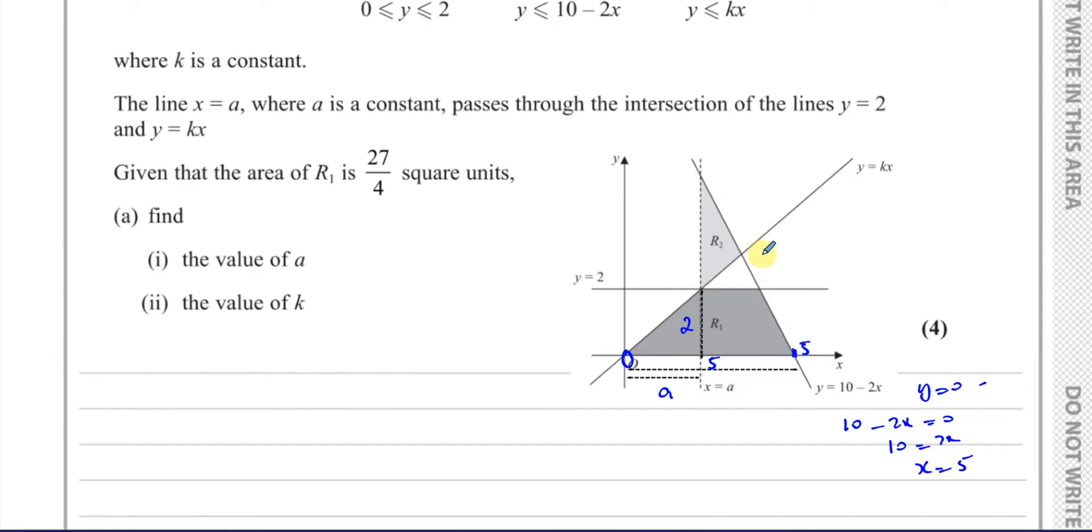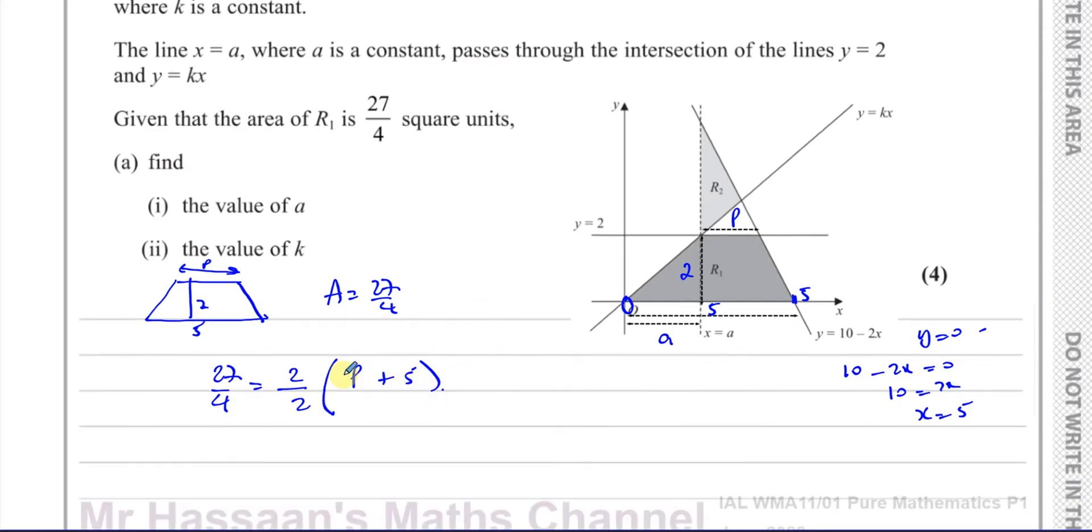And now what we need to find is this length here that will help us find the area of the trapezium. So I don't know what this length here is, but I can find that length. So let's find what that length is there. We've got that this is 5, and this is 2, and this I've called it P. But I know the area of the trapezium is 27 over 4, so I can say that 27 over 4 square units is equal to the distance between the parallel sides divided by 2 times the sum of the parallel sides. So these twos will cancel out. So I'm left with 27 over 4 minus 5 equals P. So P is equal to 27 over 4 minus 20 over 4 is 7 over 4. So this is 7 over 4 units from there to there.